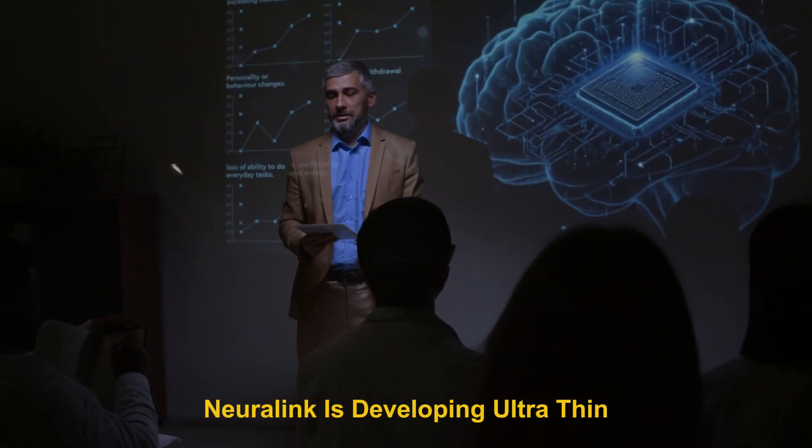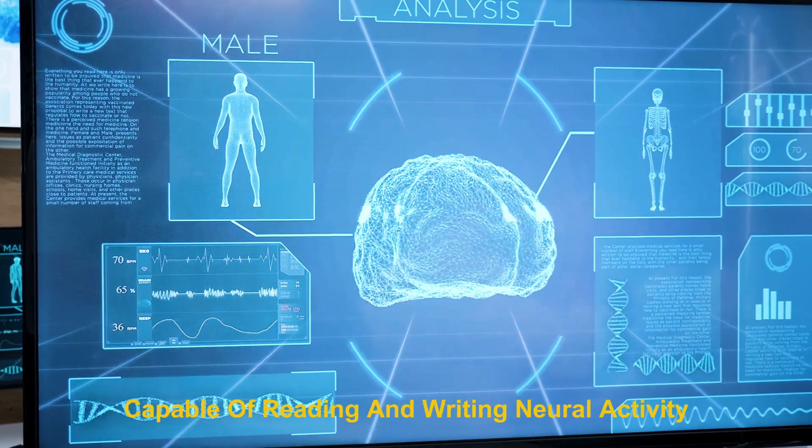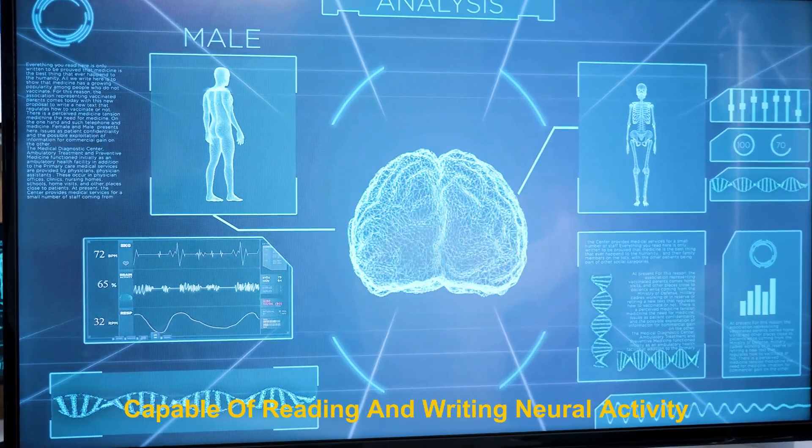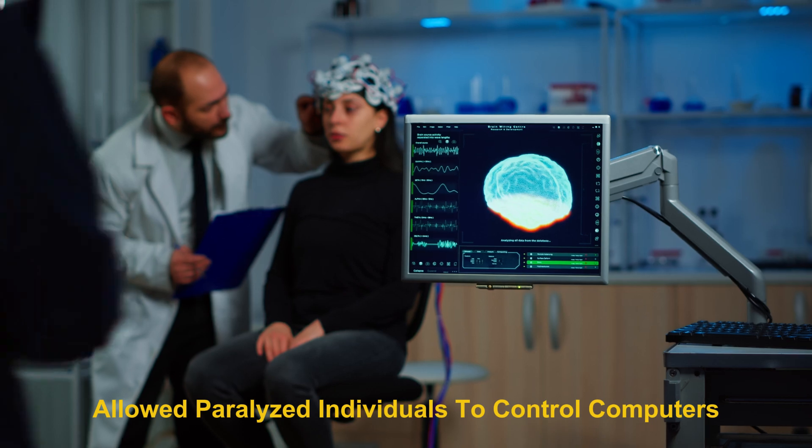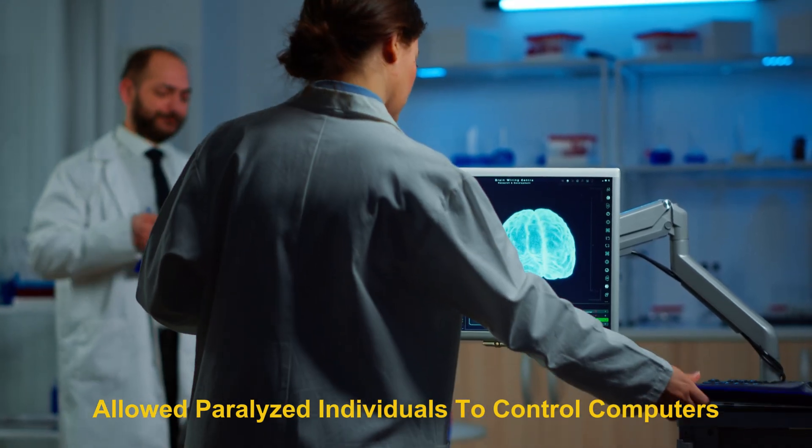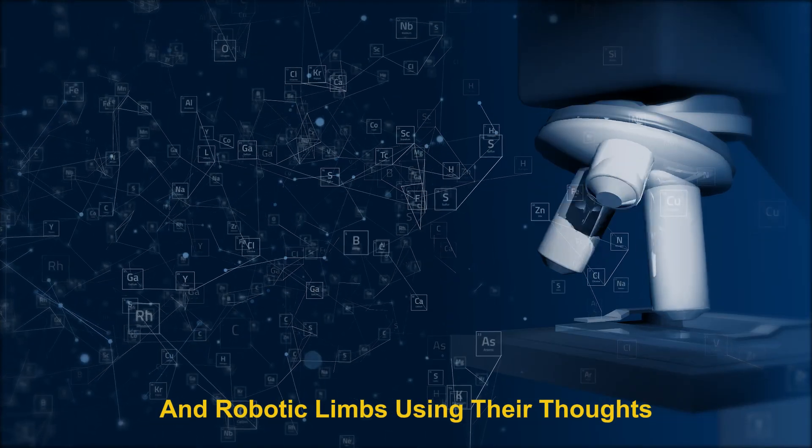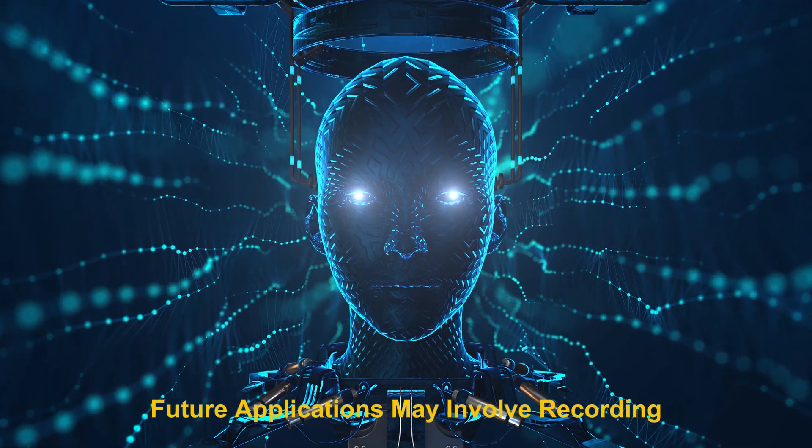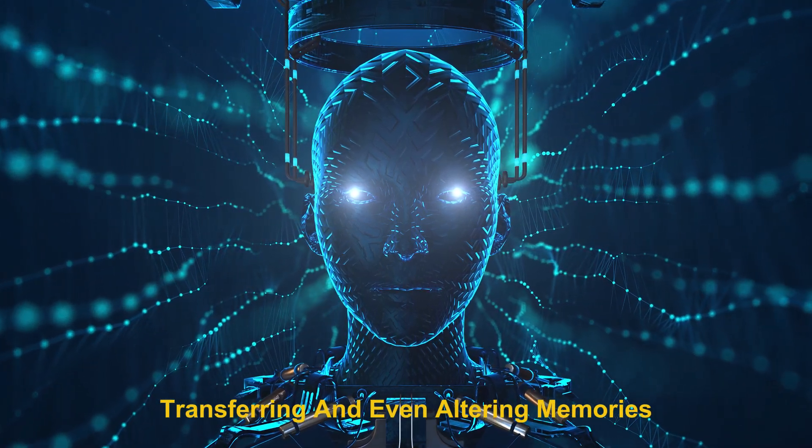Neuralink is developing ultra-thin, flexible brain implants capable of reading and writing neural activity. Early experiments have allowed paralyzed individuals to control computers and robotic limbs using their thoughts. Future applications may involve recording, transferring, and even altering memories.